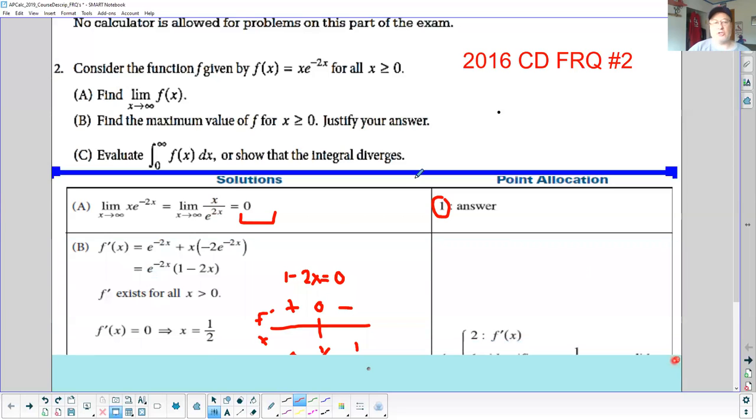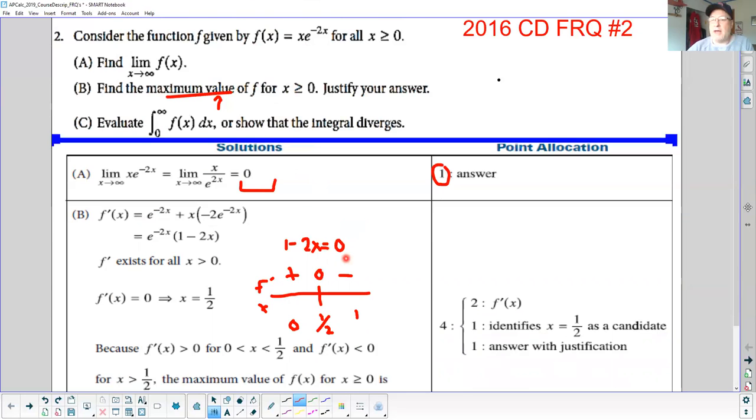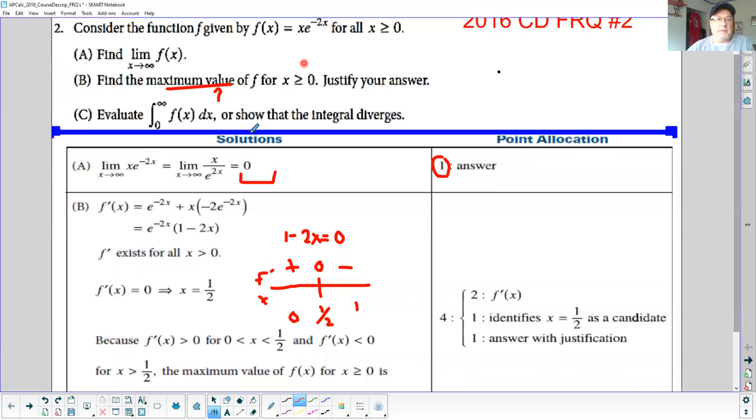The next question says find the maximum value of f, justify your answer. First of all, the word value means you want the y value. You have two basic tests: the first derivative test and the second derivative test. The first thing you need to do is take the first derivative. It needs to be done by product rule.